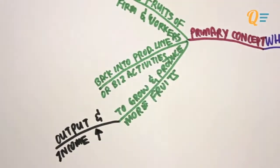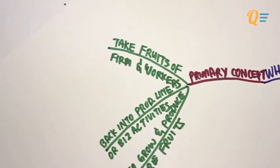So what are these fruits that we're talking about? These fruits are actually leftover profits or resources such as materials and other work-in-progress goods that can be put back into production. You can even use this to buy more equipment or more machinery so that your production level can increase — hence more output, more goods and services, more income.